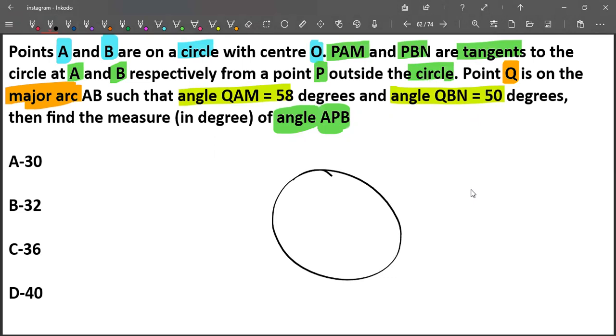So this is the circle, and here is point P. Let us now draw tangents from point P.